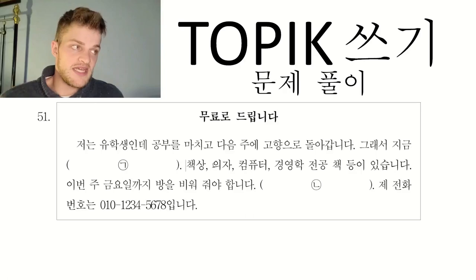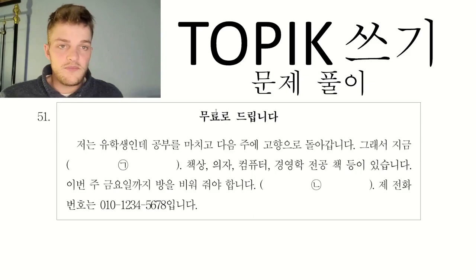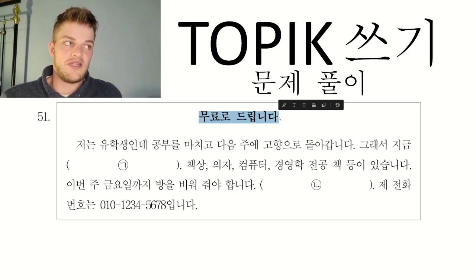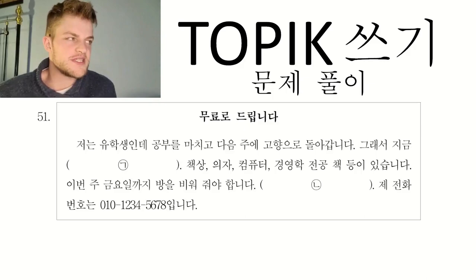Then you look at the next sentence to get some context. They're saying we have a desk, a chair, a computer, a management textbook, et cetera — 등이 있습니다, so there are these things on offer. And then the other thing you need to make sure you look at is the title. The title here is 무료로 드립니다 — I'm giving it for free. From all this context, you can guess pretty simply that they've finished their studies and now need to give away the things they've been using, for free.